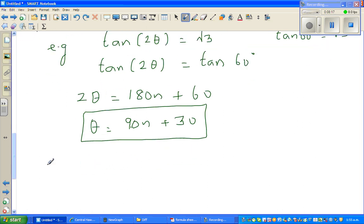So this is your general solution. So I can say if n is 0, θ₁, or theta 1, if you put 0 that is 30. If n is 1, θ₂ is 90 times 1 is 90 plus 30 is 120. If n is 2, θ₂ is 90 times 2 is 180 plus 30 is 210. We'll go up to 360. When n is 3, θ₄ would be 90 times 3 is 270 plus 300. So from 0 to 360, you have 4 solutions.